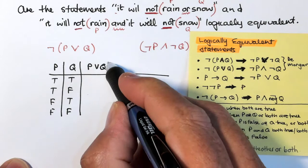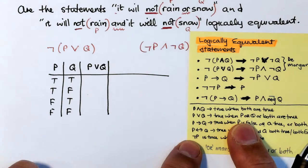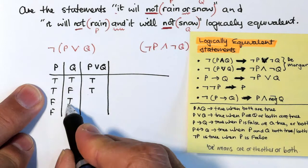Now remember P or Q is true when P or Q or both are true. Well P is true there and there. Q is true here. They both are true in the first, so that's the result for our first statement.